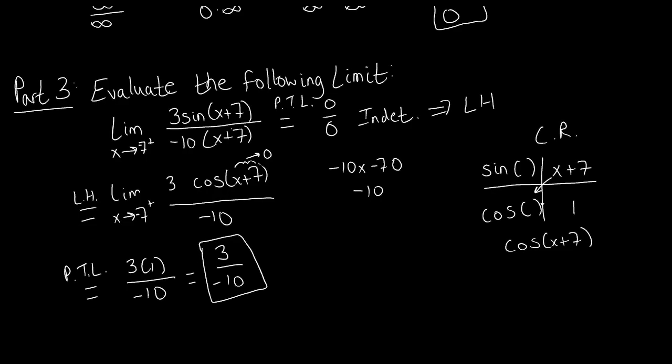L'Hopital's rule is a very special way to take limits because we can only use it if we arrive at an indeterminate form. If we don't get an indeterminate form right away, we can't use it — it'll lead to a wrong limit. But when we do reach an indeterminate form like 0/0, we can use it to find what the limit actually is, rather than trying techniques like multiplying by the conjugate or factoring, which wouldn't be as useful in a situation like this.